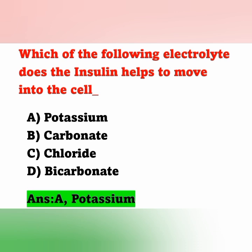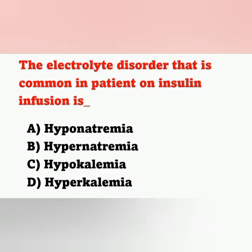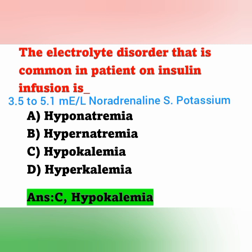Question 12: The electrolyte disorder common in patients with insulin infusion is — A) hyponatremia, B) hypernatremia, C) hypokalemia, D) hyperkalemia. The correct answer is option C — hypokalemia. Because insulin causes movement of potassium into cells, serum potassium decreases. Normal serum potassium is 3.5 to 5.1 mEq/L.